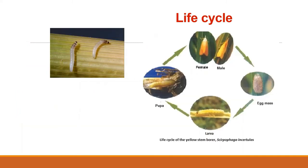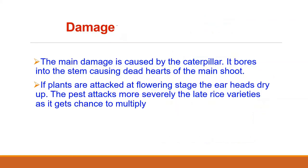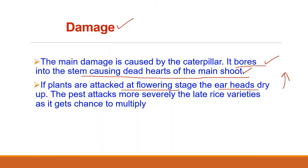Regarding the damage, the larva (caterpillar) is the damage-causing stage. Stem borer is the major pest of rice as caterpillars bore into the stem near the root, causing dead hearts especially to the central shoot, which easily comes off when pulled. When plants are attacked at the flowering stage, the ear heads dry up, causing white ear heads — devoid of grains. There may be a loss of 10-20% of crop yield.